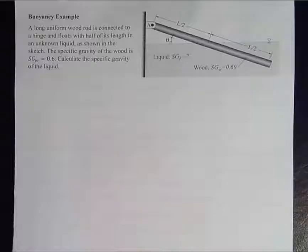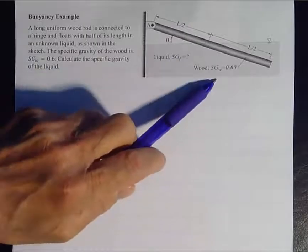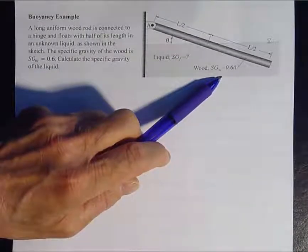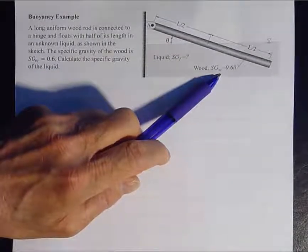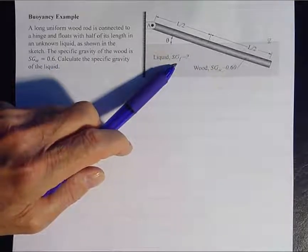A long, uniform wood rod is connected to a hinge at point A here, such that half of its length floats in a liquid of unknown specific gravity. And we're told that the specific gravity of the wood is 0.6 and we're after finding out the specific gravity of this unknown fluid.